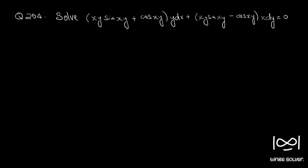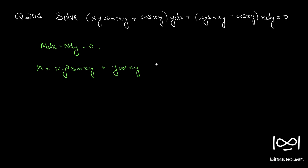The given equation is in the form M dx + N dy = 0. We will check whether the given equation is exact first. So M is xy²·sin(xy) + y·cos(xy) and N is x²y·sin(xy) - xy·cos(xy).